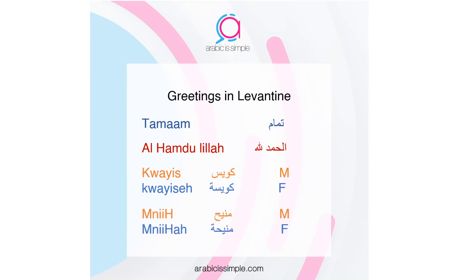Another way to say 'good,' mostly in the Syrian or Lebanese accent, is to say 'mnih' if a male is talking, and 'mniha' if a female is talking.